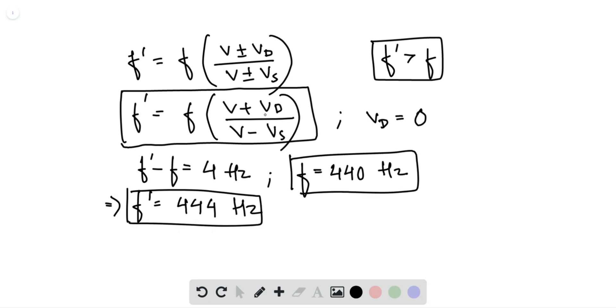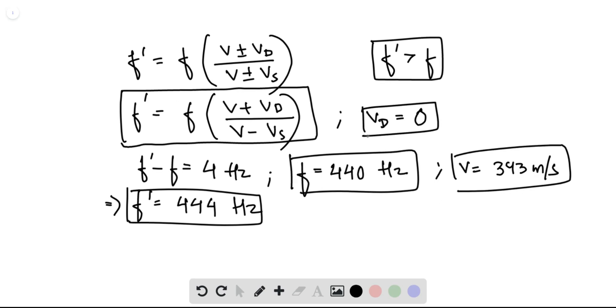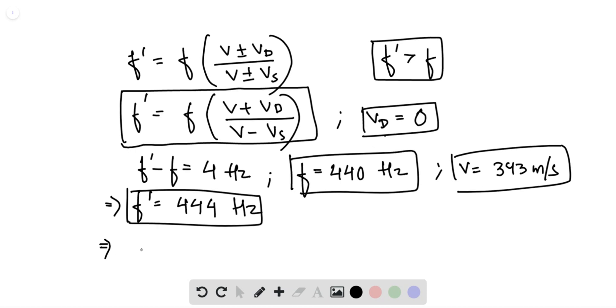And v is simply the speed of sound, which is 343 meters per second, and v_d is 0. So now we can plug these four values in this equation and solve for v_s.